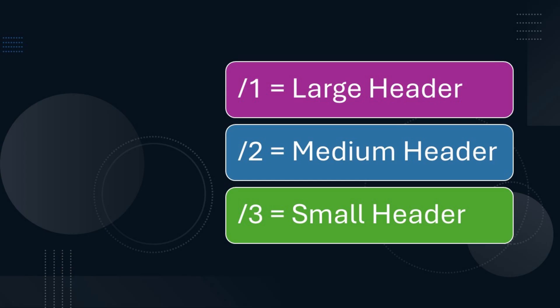That entire line of text will now become the header. To make things even easier, you have keyboard shortcuts. Try this: hit the slash key, type the number one, and hit Enter — you've just created a large header. Likewise, slash two, Enter creates a medium header; slash three, Enter creates a small header.